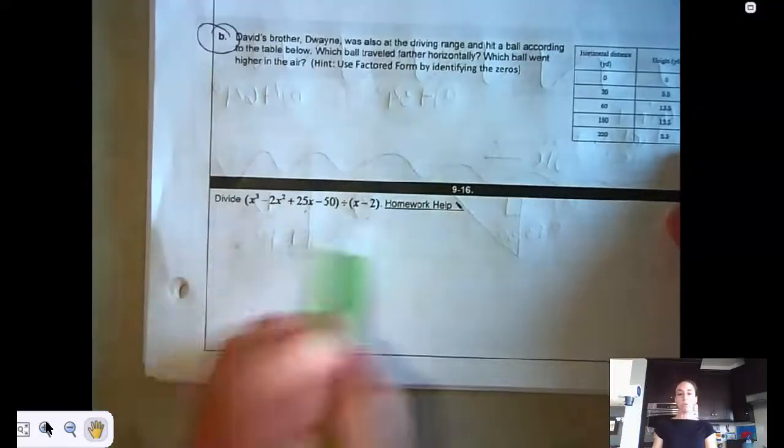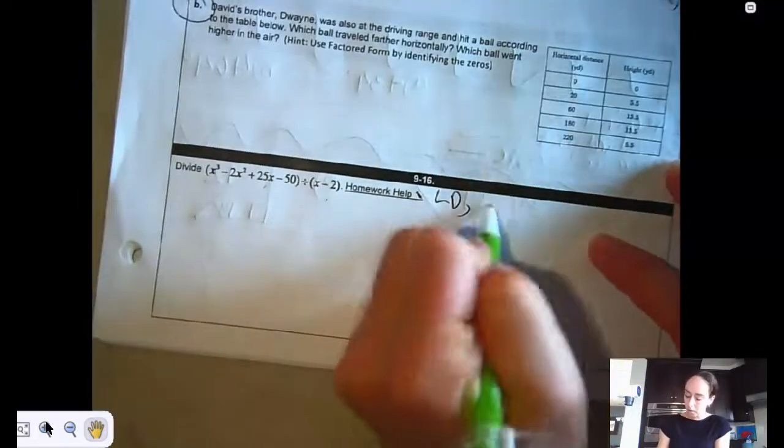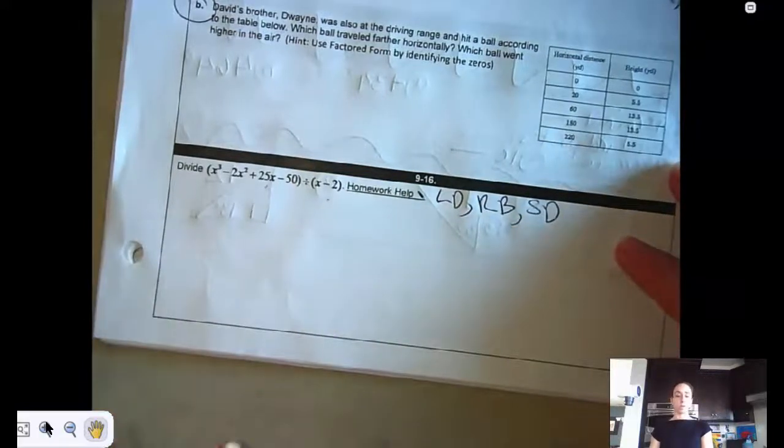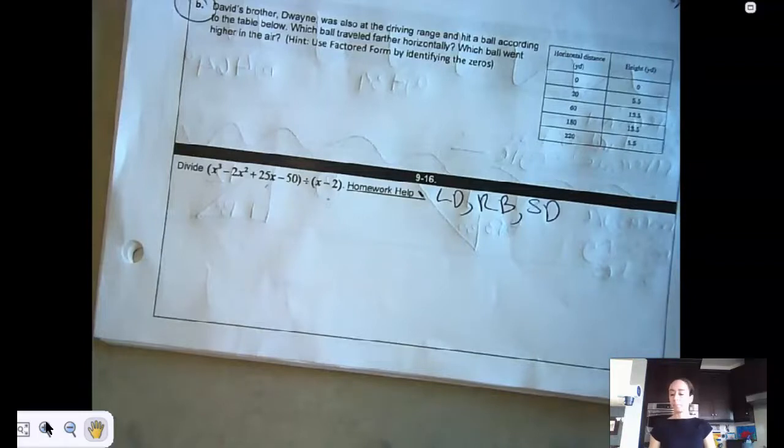This one is dividing. So you can either do long division, reverse box, or synthetic division. I don't care which one. It's not asking you to find all the zeros. All it's saying is divide it.